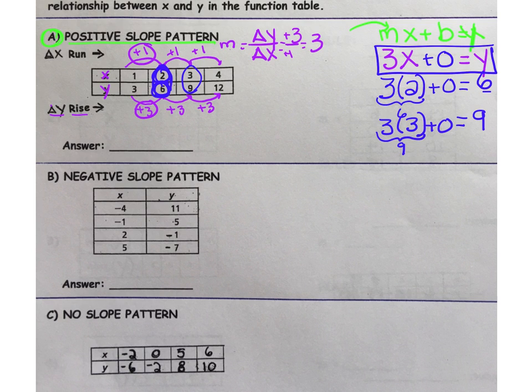So clearly this is our connection between X and Y. Do we need the 0 there? No. You could just write 3 times X equals Y. Now let's take a look at the next given table.